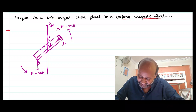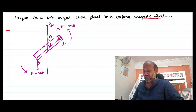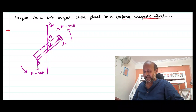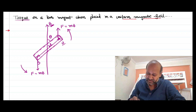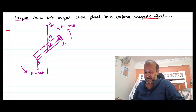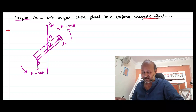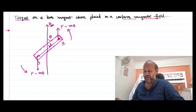Let that angle be equal to theta. Now there is a turning effect because of which the magnet has turned. That turning effect is called torque. The meaning of the word torque, which is a Greek word, is turning effect. So the magnet turns — by how much it turns, what is the torque that it is experiencing, is our equation to find.